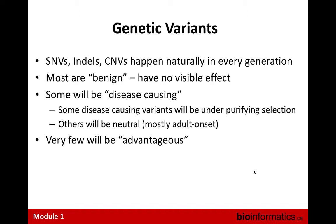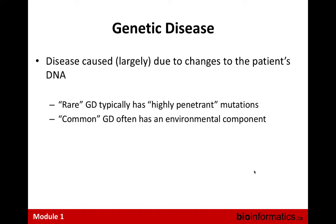Similarly, diseases that really manifest themselves in old age — like Alzheimer's disease — their variants are not going to be under selection; they won't make a difference as to whether somebody can have children. Finally, a tiny fraction of variants will be advantageous — they will actually make you smarter, faster, better than the previous generation — and what happens with those is that they eventually take over the population. Genetic diseases are largely caused by changes to the DNA; there's also an environmental factor, but we don't fully understand it.